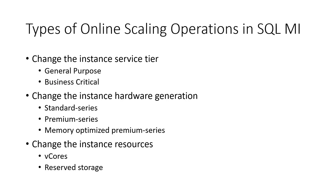There are three different kinds of scaling operations in SQL Managed Instance. You can change your instance service tier — you can move from General Purpose to Business Critical and back if you want to. You can also change the hardware generation for your Managed Instance: you can choose between standard series, premium series, and memory-optimized premium series. Finally, you can change the resources assigned to your instance — the number of vCores and the reserved storage.